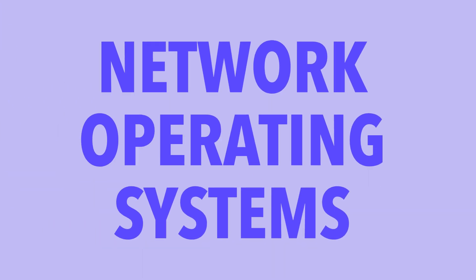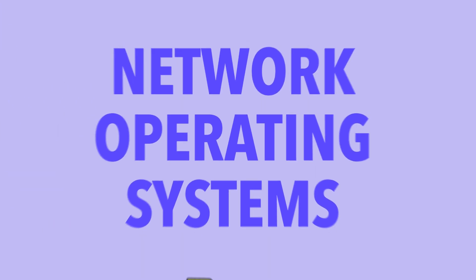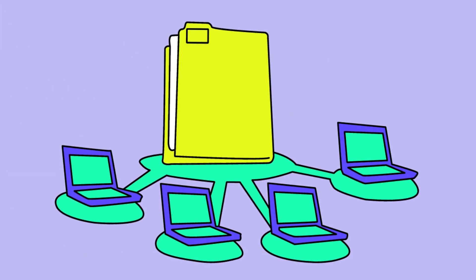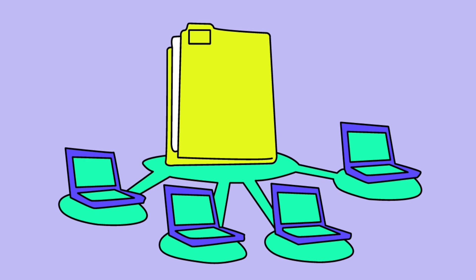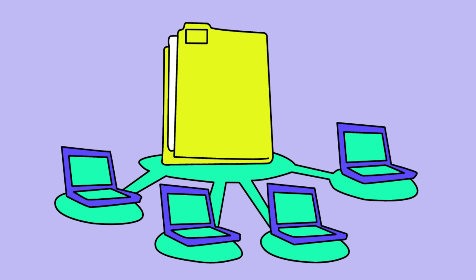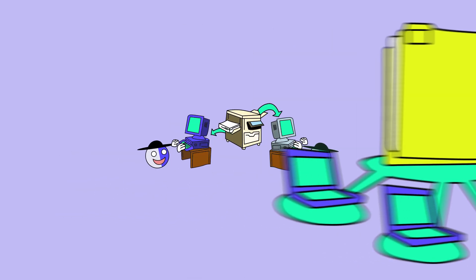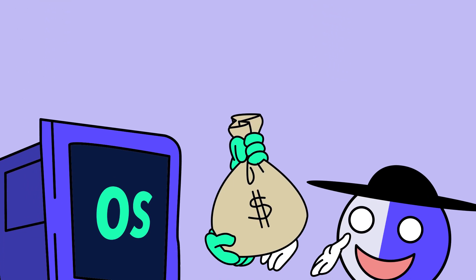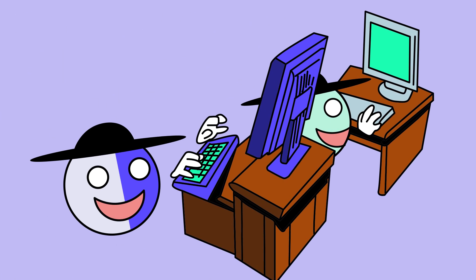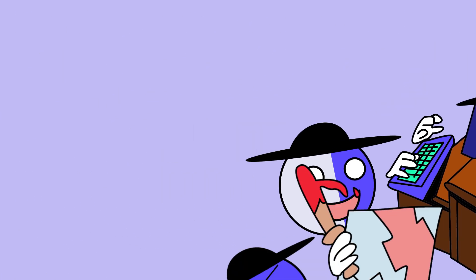Network operating systems manage computers in a network, making it easy for them to share resources like files or printers. Think of an office with several computers connected to a single printer.